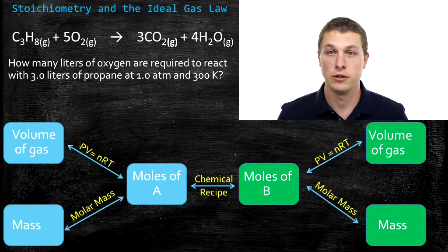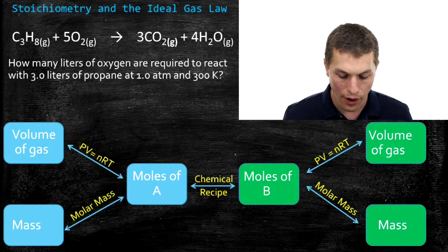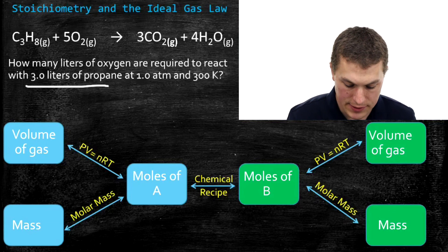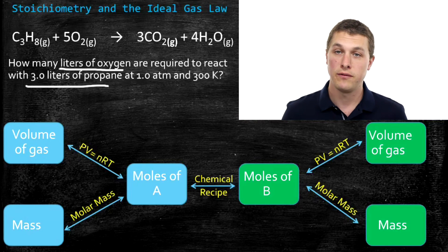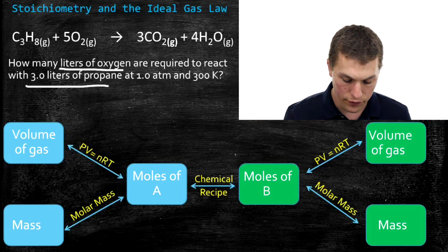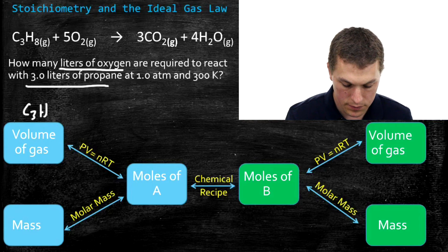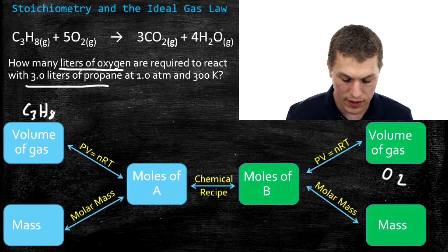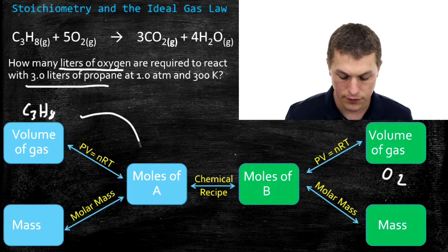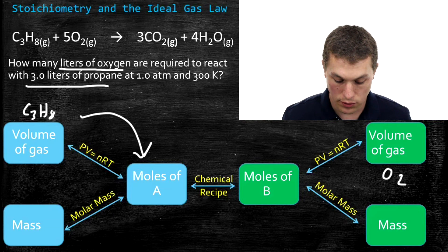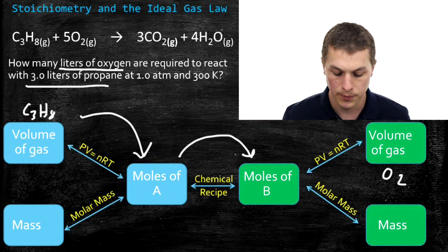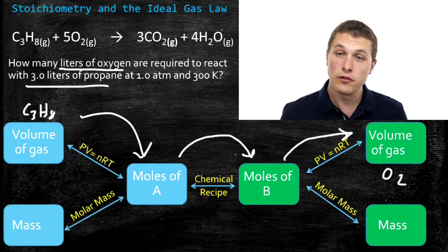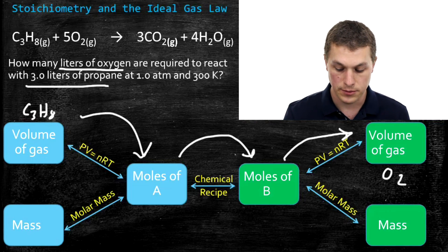To figure out how to approach this, let's go back to our flow chart. We start with liters of propane and want to end with liters of oxygen — so we're going from a volume of gas to a volume of gas. This takes three steps: first, go from volume of propane to moles of propane using the ideal gas law; second, go from moles of propane to moles of oxygen using the chemical recipe; third, go from moles of oxygen to volume of oxygen using the ideal gas law again.